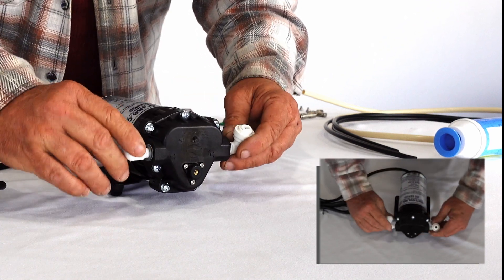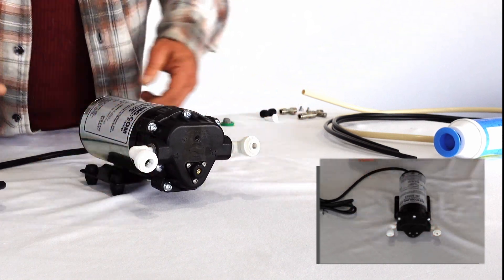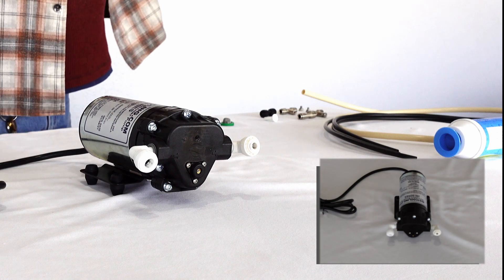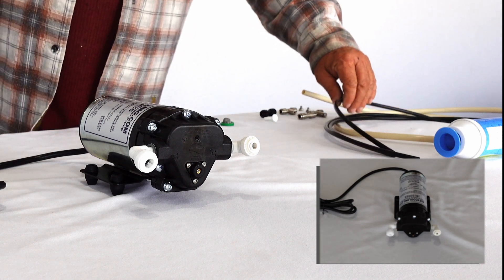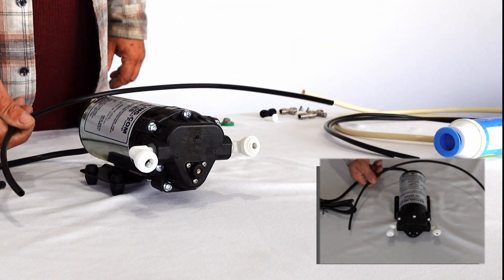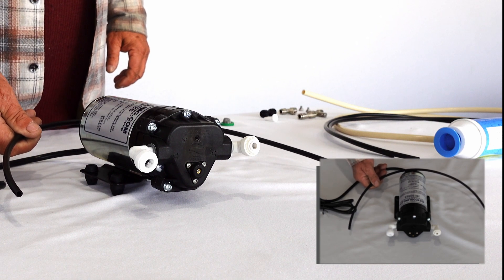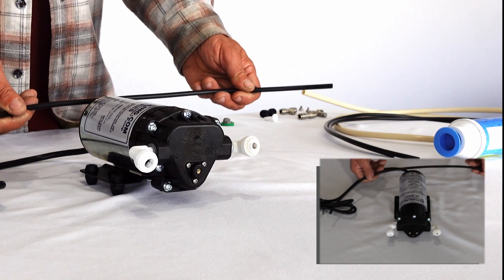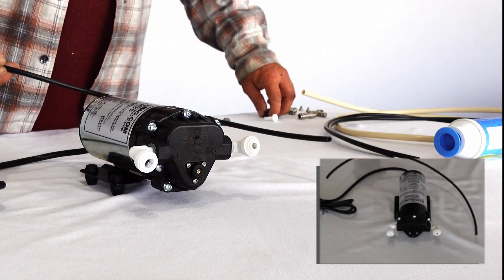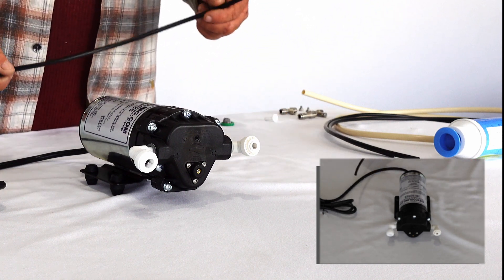Now you can turn these whatever direction you need. Then you want to cut your tubing into 2 to 3 foot sections. We recommend not over or under that length to assure proper coverage.